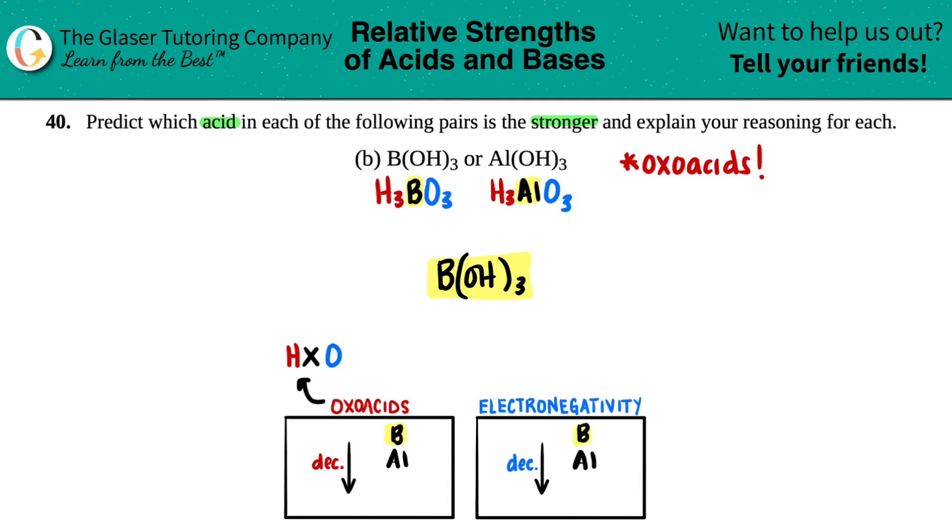And what electronegativity means is that these elements are more easily or more readily to become negative charges by giving up one of the hydrogens. So if it's easier for you to get rid of a hydrogen and become negative, you'll do it quicker. And that's what acids are all about. It's getting rid of that hydrogen. Acids donate hydrogens.